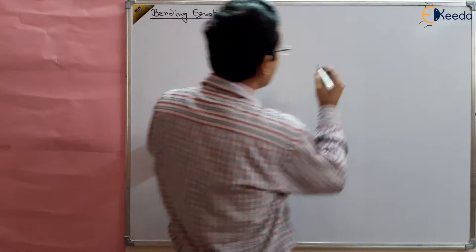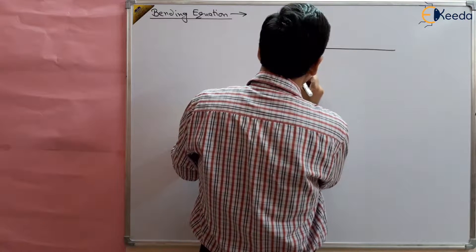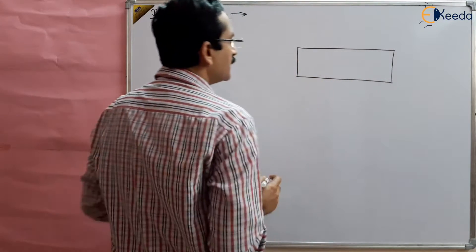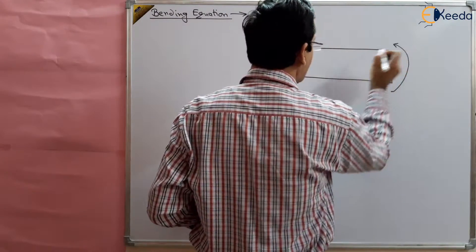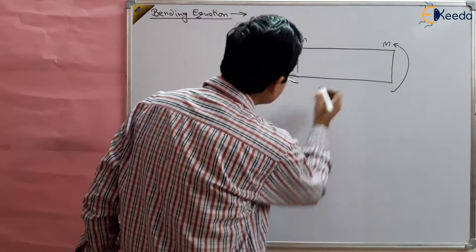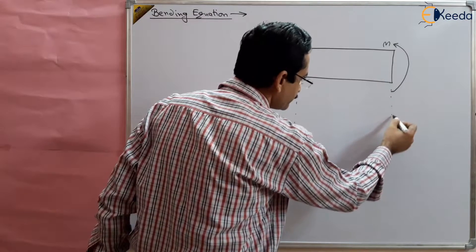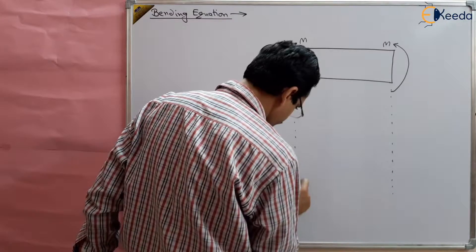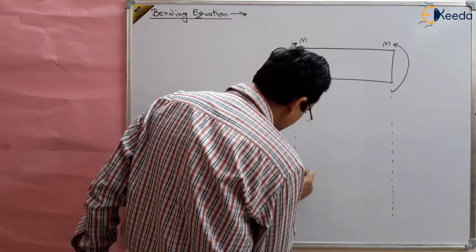That we are going to use here. Suppose there is a beam like this, and simple bending is prevailing, where a bending moment is applied. By the application of the bending moment, this body is deformed. There will be compression at the outer fiber and tension in the lower fiber.